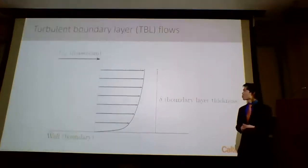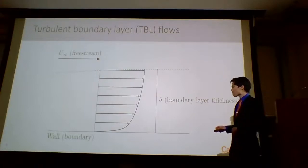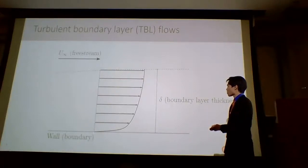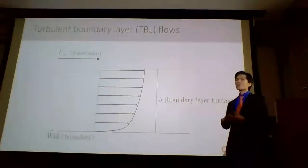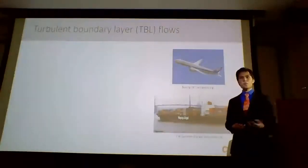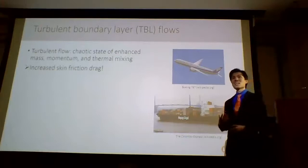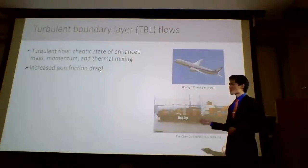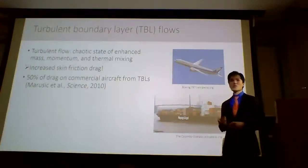Let's start with the turbulent boundary layer. We have boundary layer flow any time a fluid moves relative to some wall or boundary. Friction brings the relative velocity of the fluid to zero right at the wall, and through the action of viscosity, we bring it back into the flow. We get this flow in all sorts of applications — for example, the wing of an aircraft or the hull of a ship. In engineering applications, the flow almost always becomes turbulent, a chaotic flow state of enhanced mass, momentum, and thermal mixing, leading to a dramatic increase in skin friction drag. Up to 50% of the total drag on a commercial aircraft can be attributed to turbulent boundary layers.